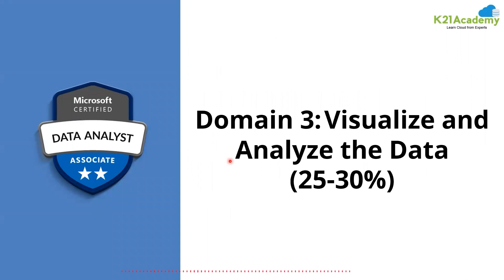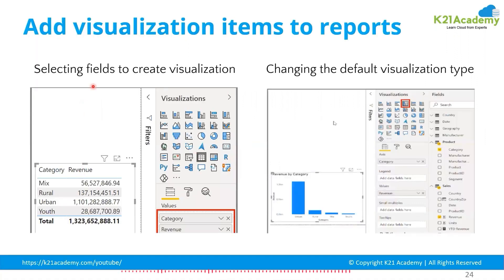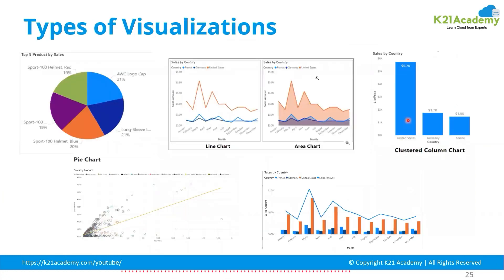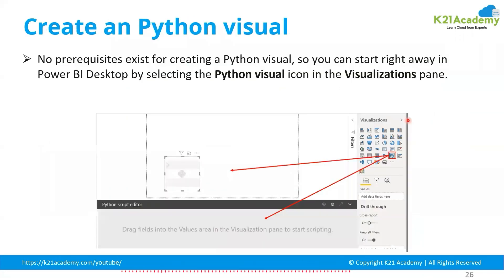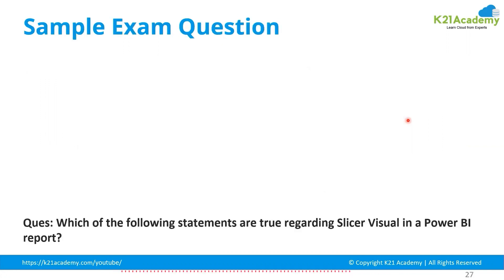The third domain is Visualizing and Analyzing the Data. To create a visualization, you simply select a column and Power BI will show the visualization. You can change the default visualization type by selecting a specific visual icon. There are many visual types available, including pie charts, and you can also use Python visuals if you know Python programming.